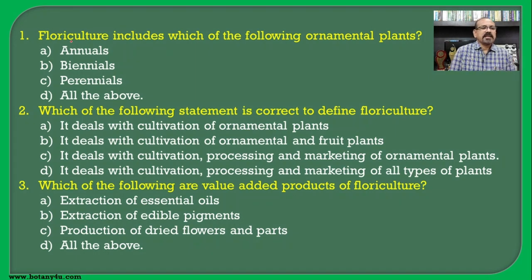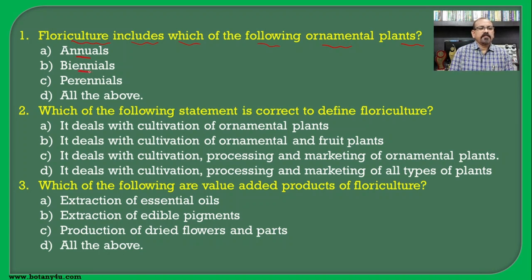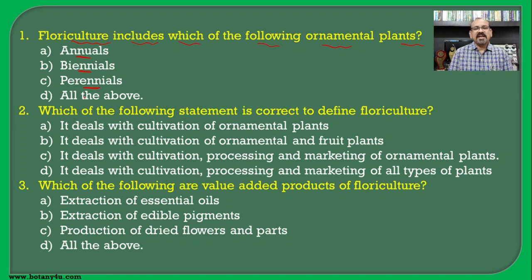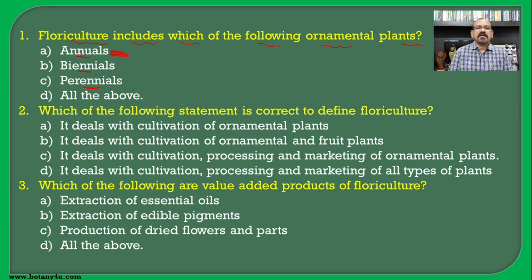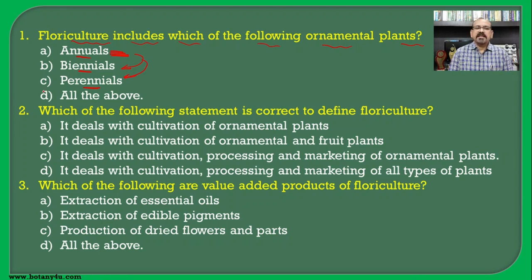The first question: floriculture includes which of the following ornamental plants — annual, biennial and perennial? If you see the practices carried out under floriculture, that includes annual plants, and in addition to that biennials and perennials are also used in cultivation. Hence all of the above become the correct answer for this question.